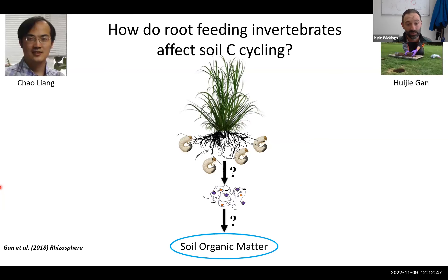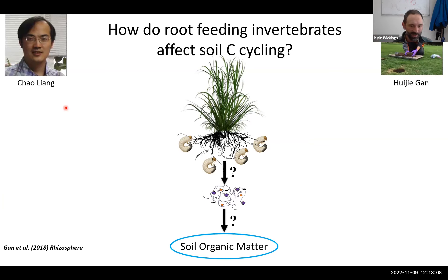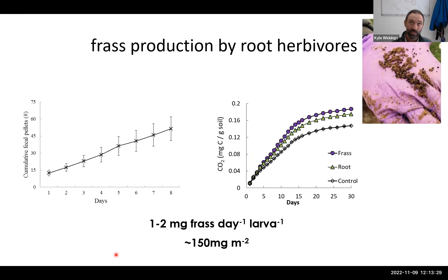A project done by my past postdocs Hui Zia Gan and Chao Liang asked: how do root feeding insects affect soil carbon cycling? We had that earlier slide where I tried to cram herbivores into the soil brown food web, and we're going to keep pushing that because it's relevant. This experiment came from an observation Hui Zia made about the overall amount of material that root feeding insects produce and turn over in soils.